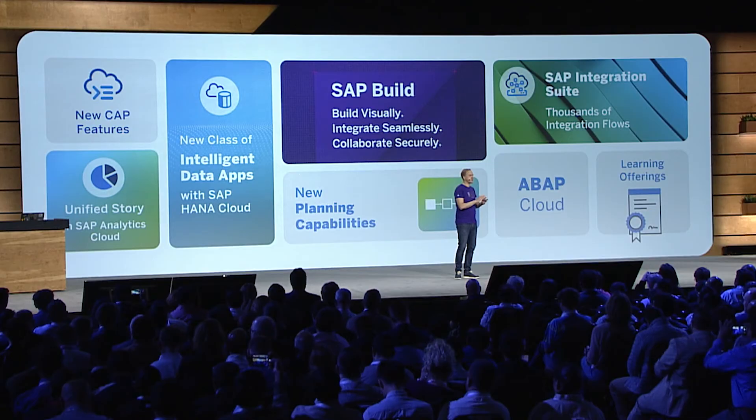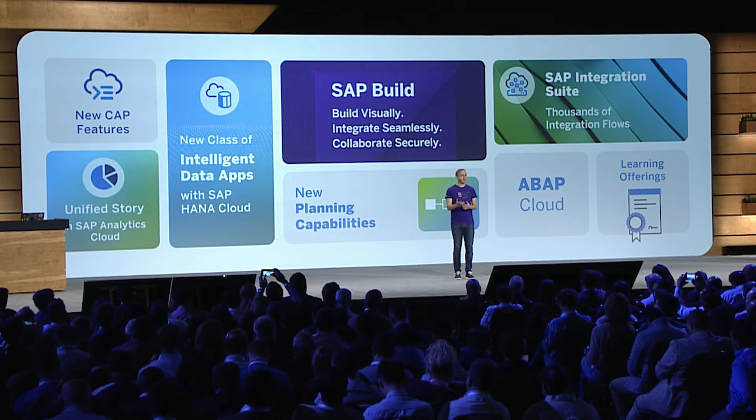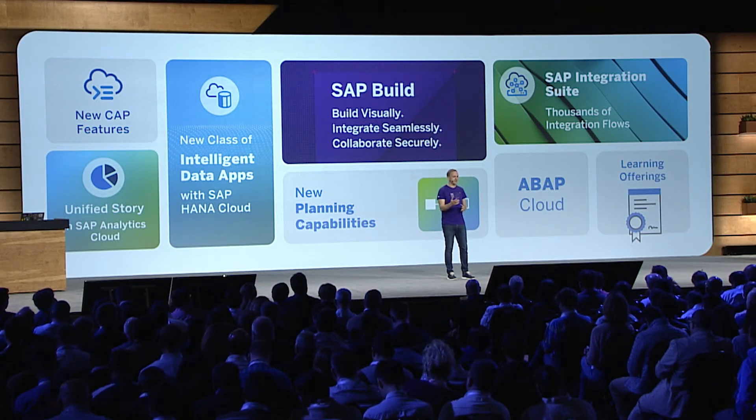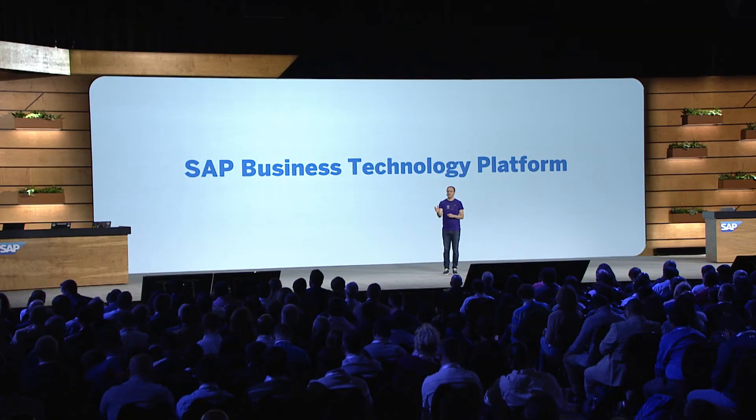We showed you the endless possibilities you get with SAP Business Technology Platform. We announced SAP Build, ABAP Cloud, and new features in CAP. We showed you the value of the SAP Integration Suite with thousands of integration flows. We announced Unified Story in SAP Analytics Cloud, a new class of enterprise intelligent data apps with HANA Cloud, and major improvements in our planning capabilities. We also expanded our learning offerings. With SAP Business Technology Platform, we offer the only platform truly designed for business — it is the business operating system, the innovation platform for customers, partners, and ourselves. For everything technology-related in an SAP context, SAP BTP is the choice.